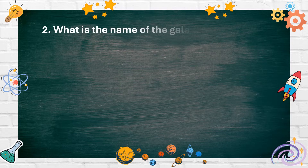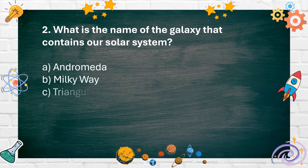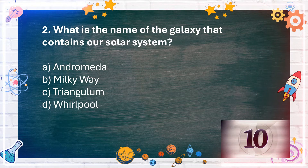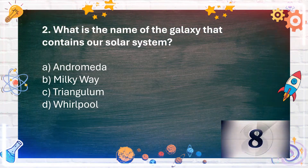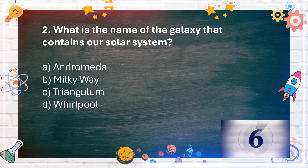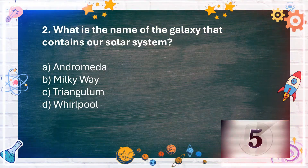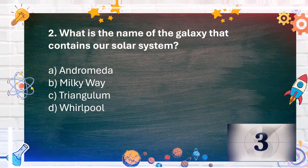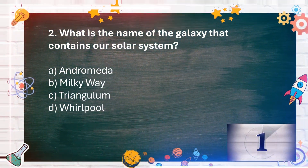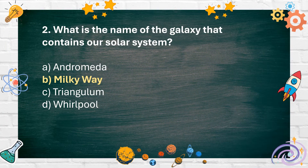Number 2. What is the name of the galaxy that contains our solar system? A. Andromeda. B. Milky Way. C. Triangulum. D. Whirlpool. The answer is B. Milky Way.